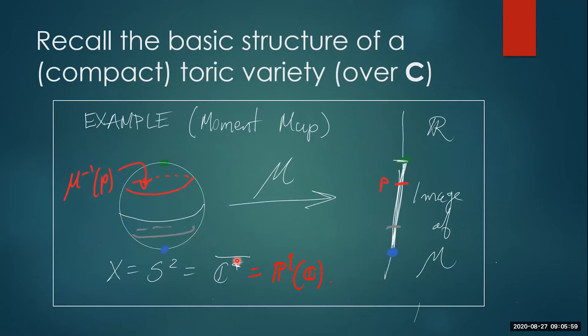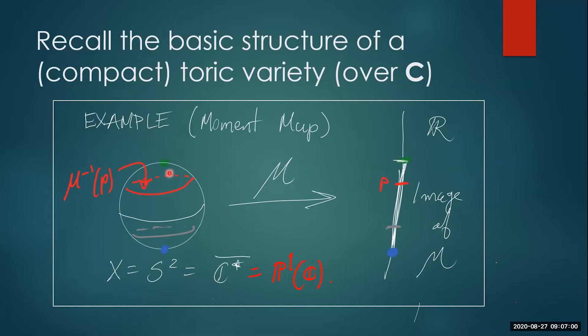An example is P¹. This is topologically a two-sphere, and it is a compactification of the one-dimensional complex torus C*. It's an equivariant compactification where two points — zero and infinity — are added. We have the famous moment map that sends it to the real line. The image of the moment map is a one-dimensional polytope — in this case an interval — with a maximum and a minimum. The inverse image of a typical point is a circle, while the inverse images of the endpoints are points — the vertices of the polytope.